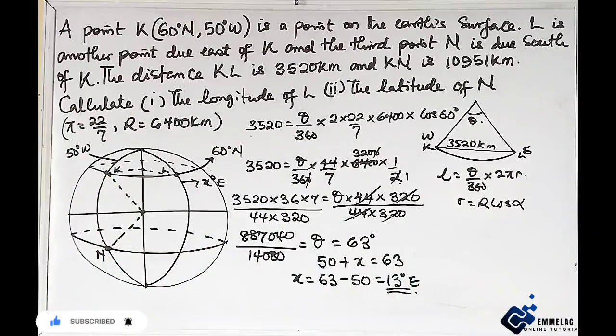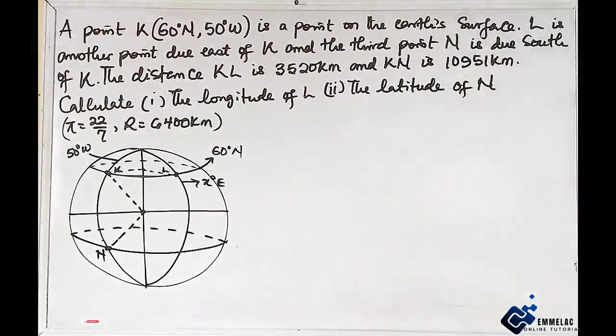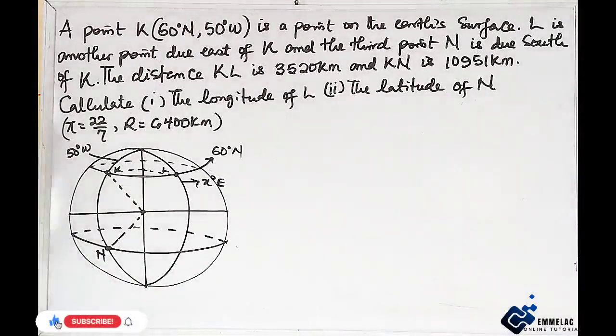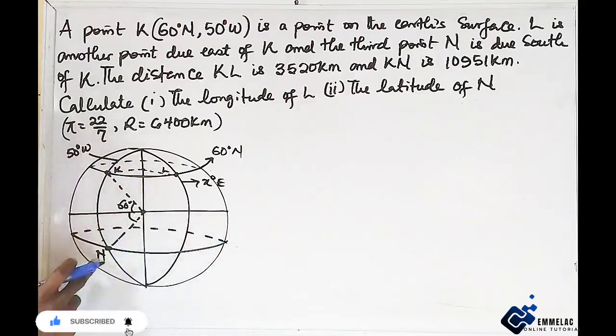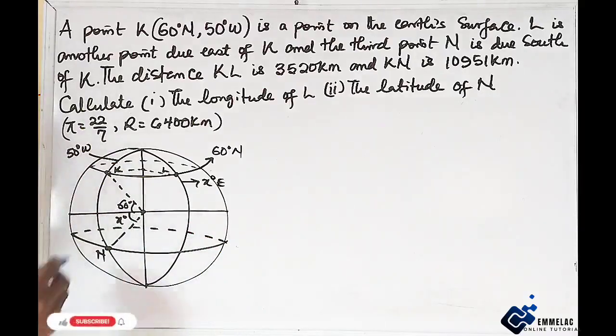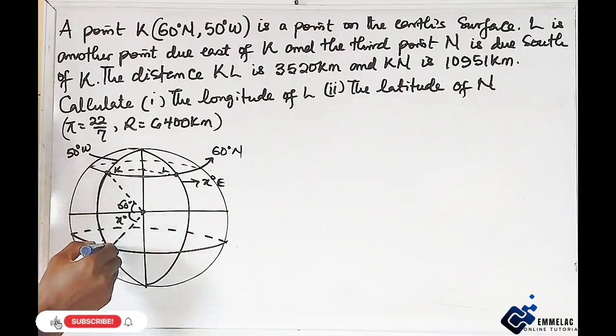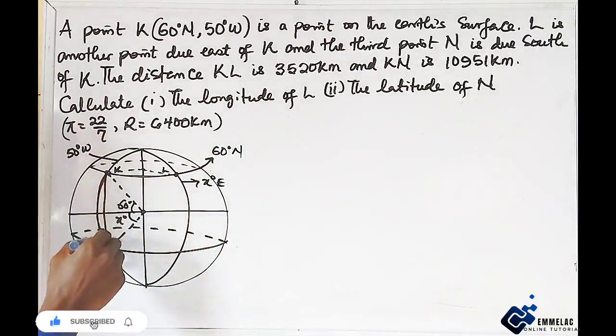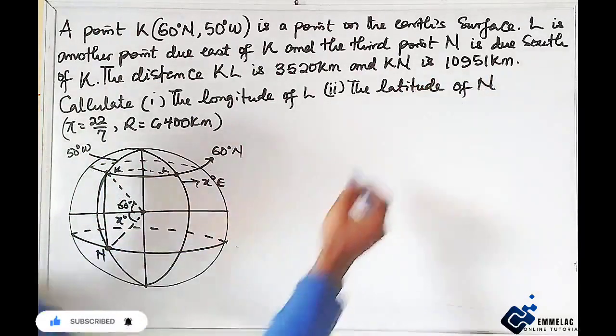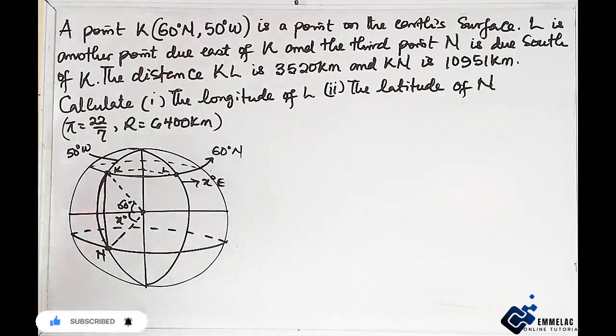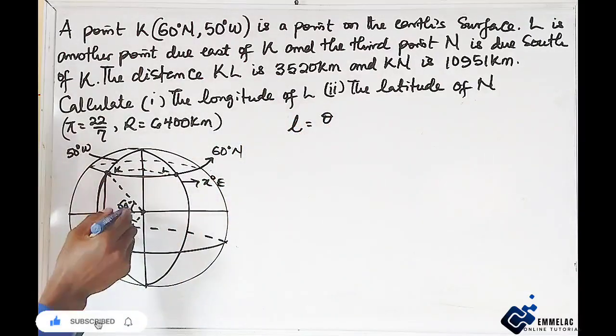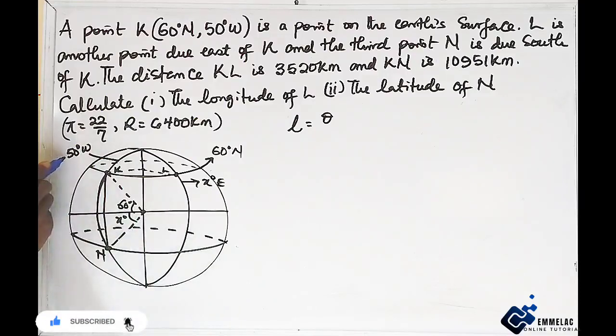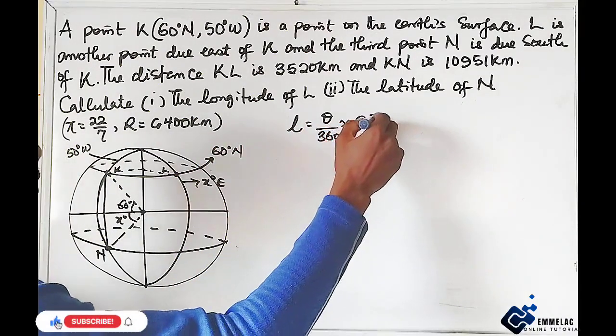Now let us find the latitude of N. For the latitude of N, which is given as this, take note of this latitude 60, it's suspended here. But we don't know that of N. We are told that KN is 10951 kilometer. With this, using the length of an arc, that will be theta, which is the angle substandard by both 60 and that of N which we don't know, then all over 360 times 2 pi big R. We're using big R because the line of longitude.